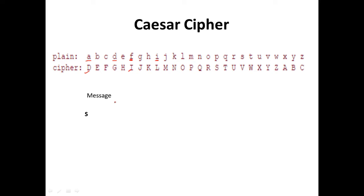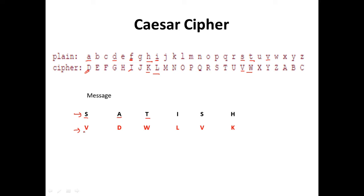Let's take an example with the message S-A-T-I-S-H. The plain text S — three characters down — gives V. A gives D. T gives W. I gives L. S again gives V. H gives K. So we take every character and substitute it with another character, encrypting SATISH as VDWLVK.